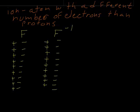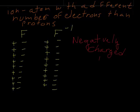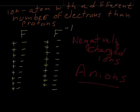What this means is that we have all of these positive charges cancelled out by electrons, but then we have one electron left over that's not cancelled out, which gives us our negative one charge. Negatively charged ions are called anions.